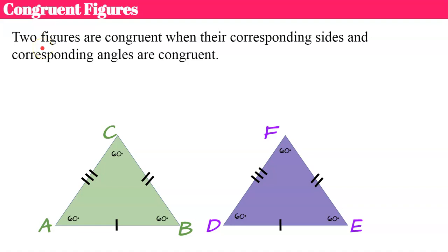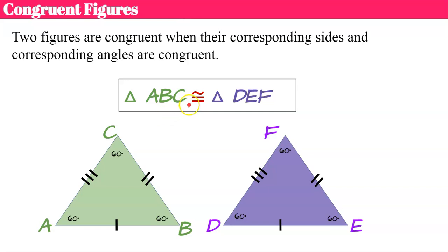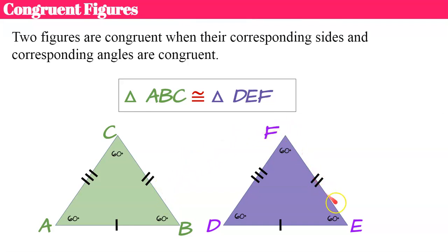Let's look at the formal definition. Congruent figures are two figures that are congruent when their corresponding sides and corresponding angles are congruent — both of these must be true. Another way to write it is with the mathematical symbol: an equal sign with a squiggle on top, meaning congruent. So triangle ABC is congruent to triangle DEF because corresponding angles A and D, B and E, and C and F are all congruent, and corresponding sides AB and DE, BC and EF, and AC and DF are congruent.